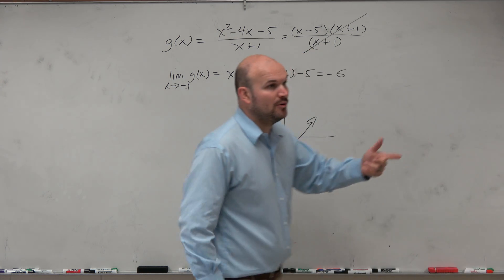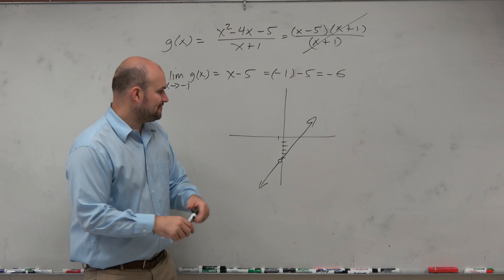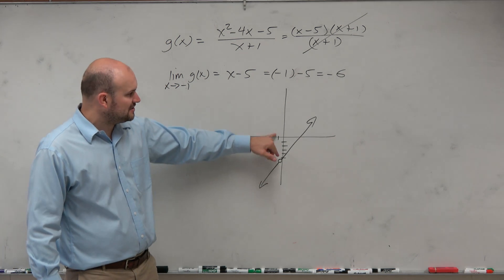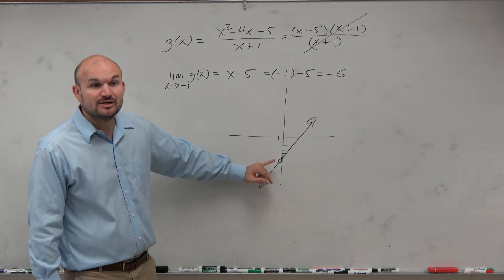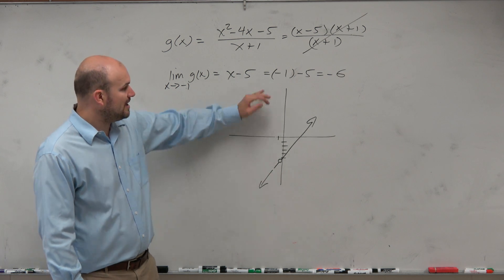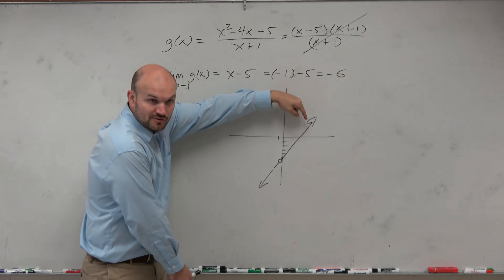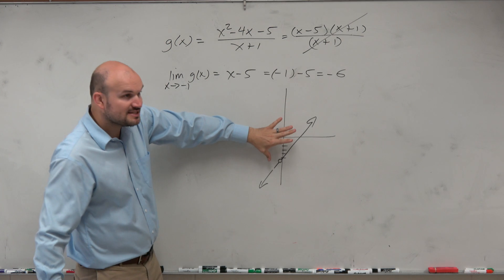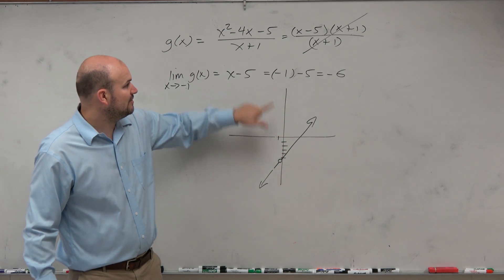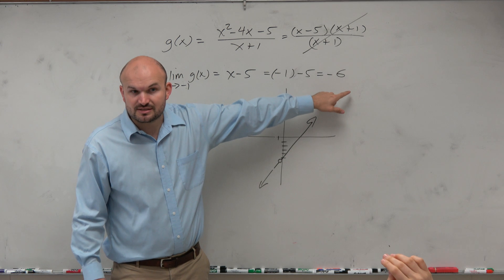But again, getting back to that point, it doesn't matter if there's a hole at negative 1. We don't care about the hole at negative 1. We care about what value we're getting closer to from the left and the right. You can see from the left and right, are we approaching the same value? Yes, and what is that value? Negative 6.